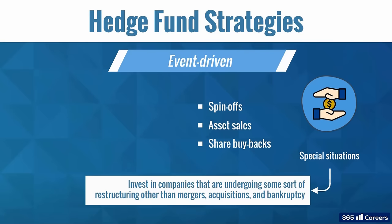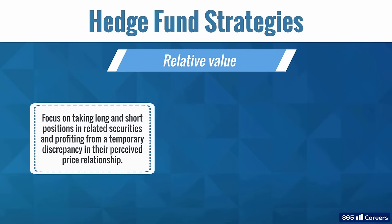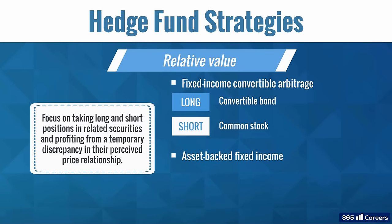Now let's consider the relative value strategies. They focus on taking long and short positions in related securities and profiting from a temporary discrepancy in their perceived price relationship. The first subcategory is fixed income convertible arbitrage, which exploits any mispricing of convertible bonds. This strategy involves taking a long position in a convertible bond and a short position in the common stock of the same company. Asset-backed fixed income is another relative value strategy that uses opportunities arising from mispriced asset-backed securities, or ABS, and mortgage-backed securities, or MBS.